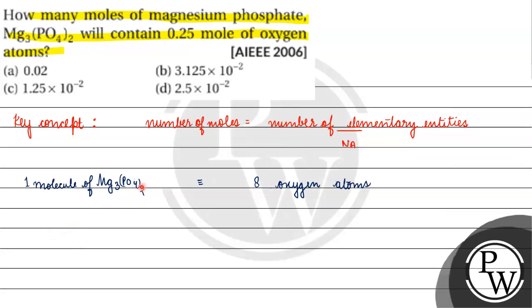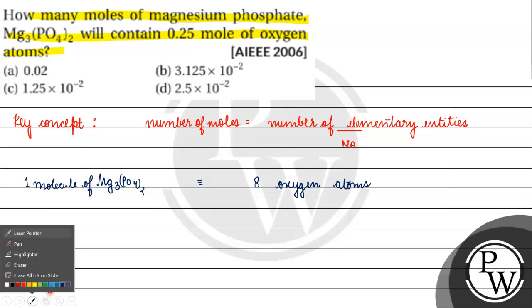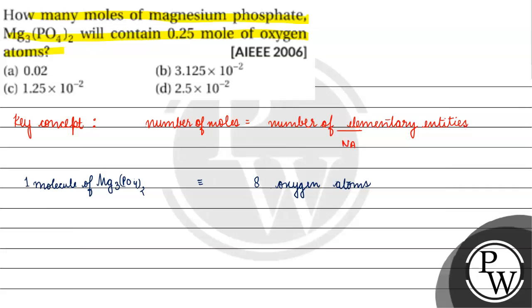PO₄ into 2 gives 8 oxygen atoms. So if we have 6.022 × 10²³ molecules of magnesium phosphate,